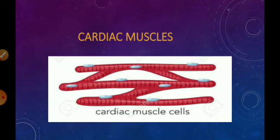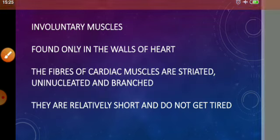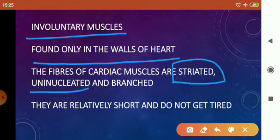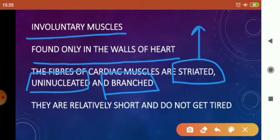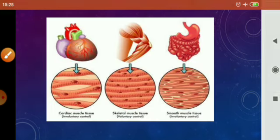Cardiac muscle has the characteristic features of both striated and unstriated muscles. These are involuntary muscles which do not get tired easily and are found only in the walls of the heart. The fibers of cardiac muscles are striated, uninucleated, and branched. Unlike striated muscles where fibers have many nuclei, cardiac muscle fibers are striated but have only one nucleus, and these branched muscles are relatively short and do not get tired.